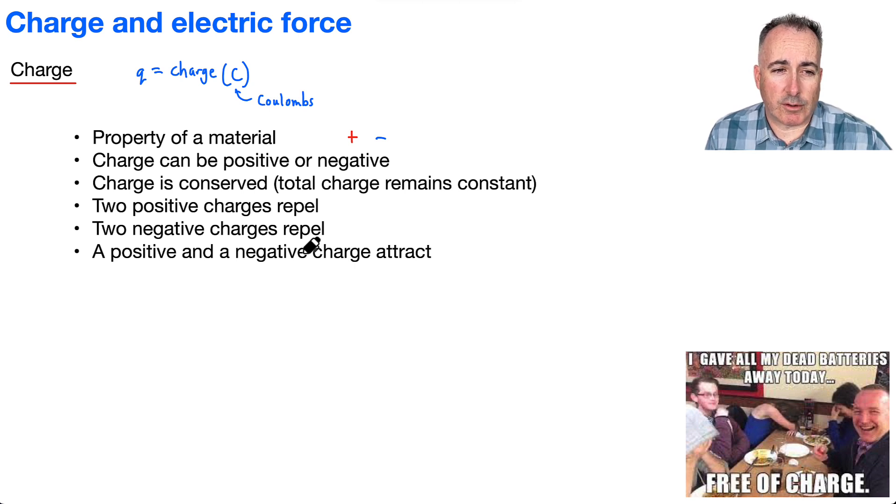And now, what happens if you have two positive charges, for example, so like a plus and a plus? Those ones are actually going to repel each other. They don't like each other. And if you have two negative charges, for example, a minus and a minus, they also repel each other.